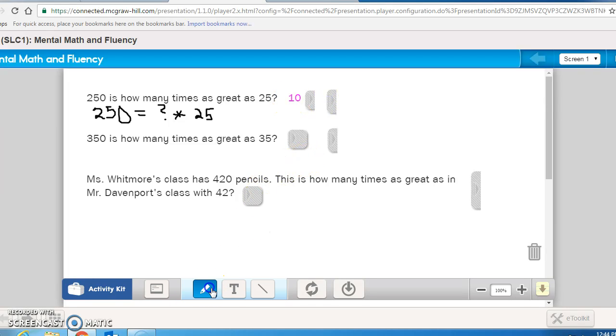If I was to write the next problem, 350 is how many times, here's my unknown, I'm just using a question mark now, as great as 35? Again, 35 times 1 is 35, and then I have this lovely 0 again, so my answer once again is 10.